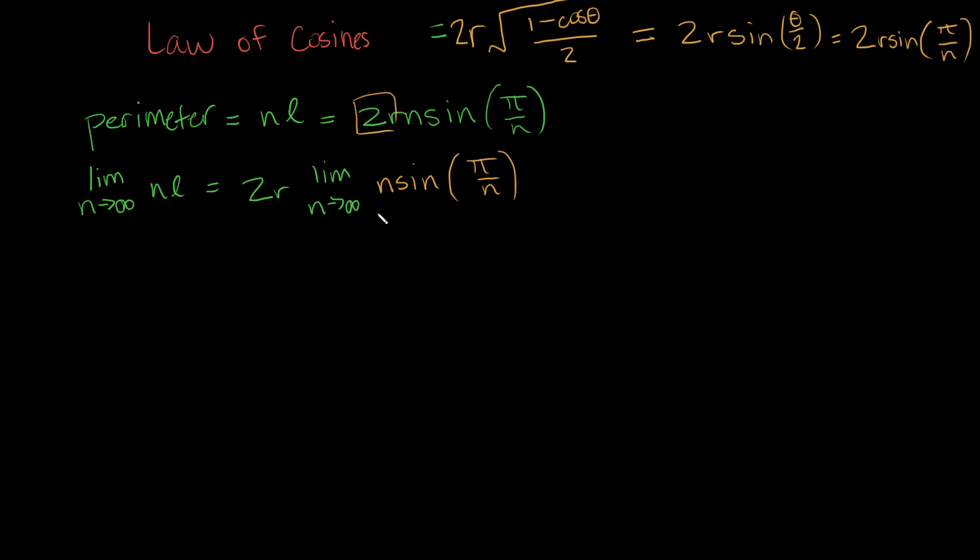Our first step here is to notice, as n goes to infinity, this n goes to infinity. This is a fraction, π over n. As n goes to infinity in the denominator, this is going to be 0, and as this approaches 0, sine of 0 is 0. So what we're going to end up with is infinity times 0. This is no good. So this is indeterminate. And whenever we hear the word indeterminate and we're dealing with limits, what we always think of is L'Hopital's rule.